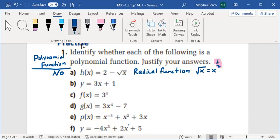b, y = 3x + 1, well, it's polynomial of degree 1, so it is a polynomial function.